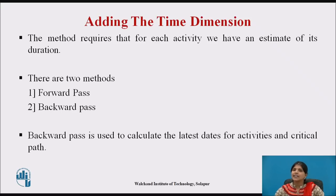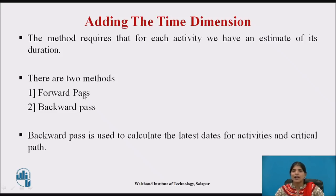Adding the time dimension, there are two methods. The first is the forward pass method and the second is the backward pass method. With the forward pass, you calculate the earliest dates, and with the backward pass, you calculate the latest dates — that is the latest start date and the latest finish date.